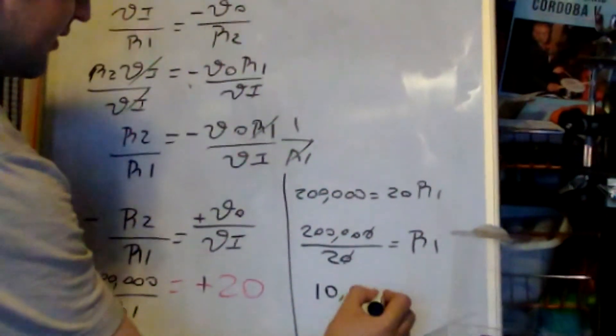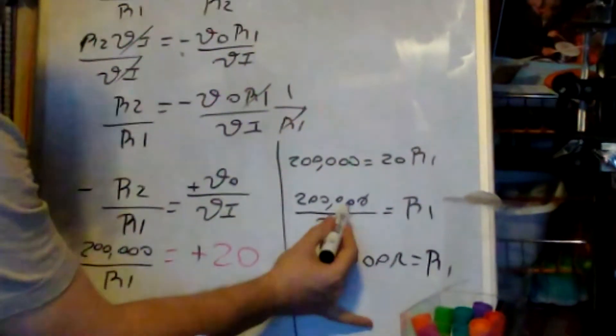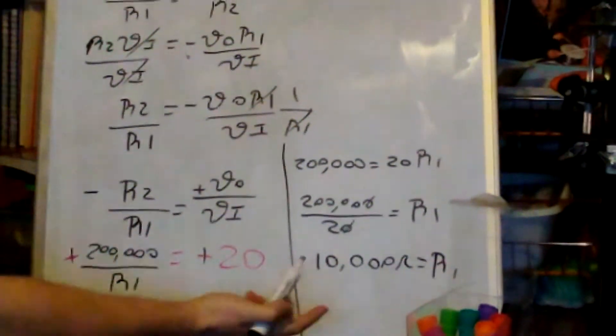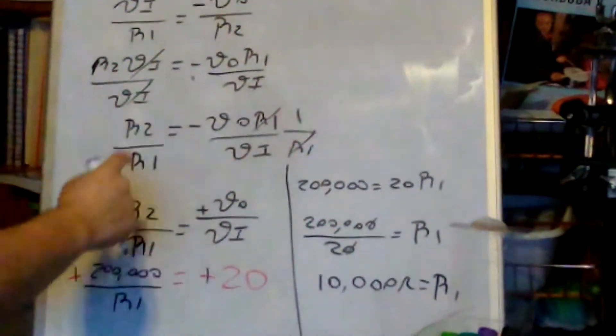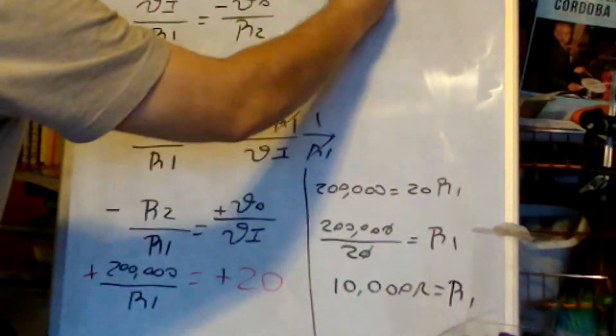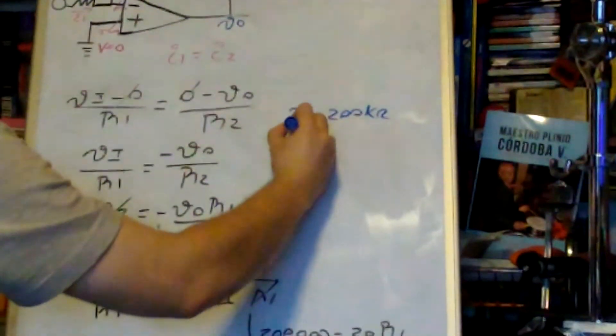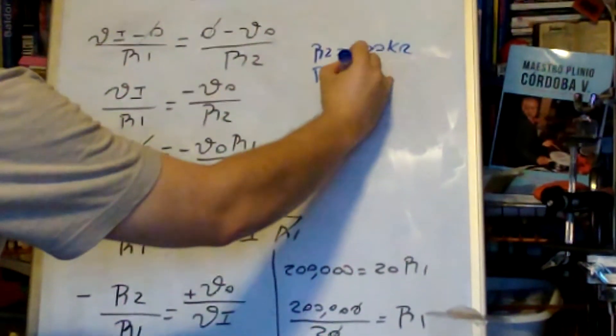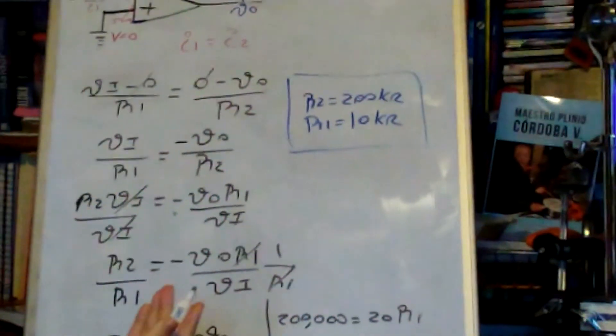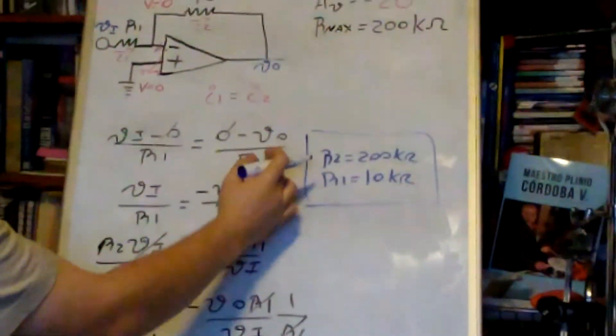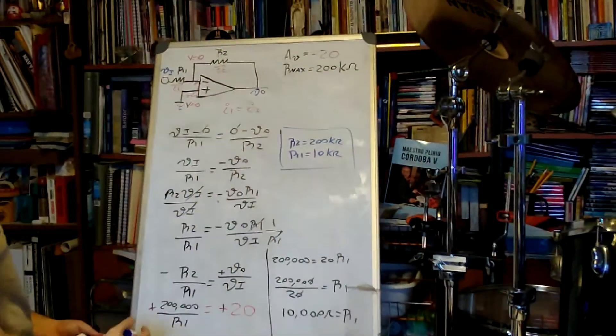So we have R1 as the answer. I choose R2 to be the max value, so R2 is 200 kilo ohms and R1 is 10 kilo ohms. So these are the values for the resistances that I choose for a gain of negative 20.